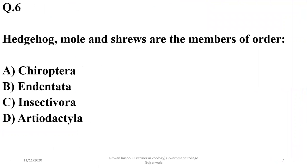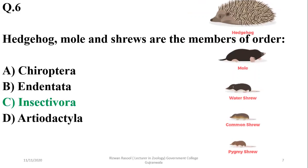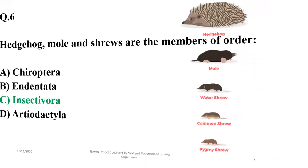Question 6: Hedgehog, mole, and shrews are members of order Insectivora — insect-eating animals. These animals, including different types of shrews, are insectivorous mammals. The right option is C.